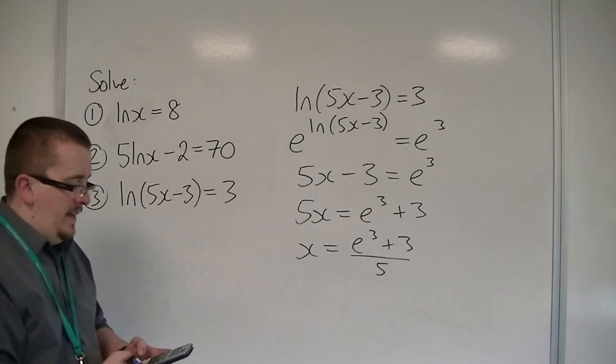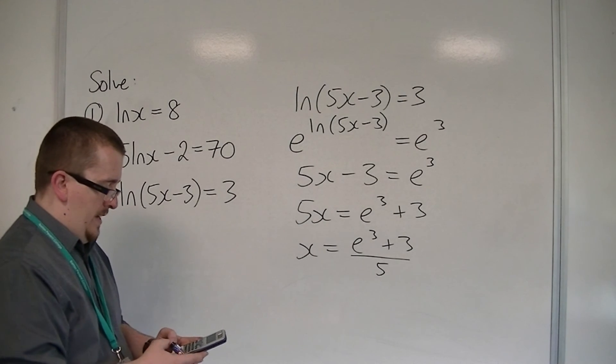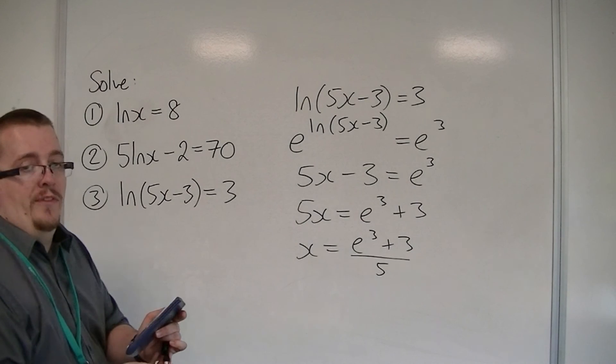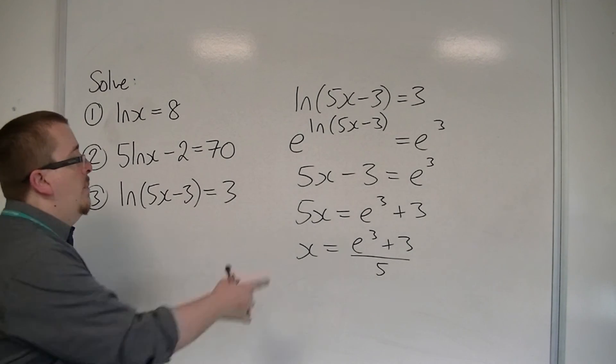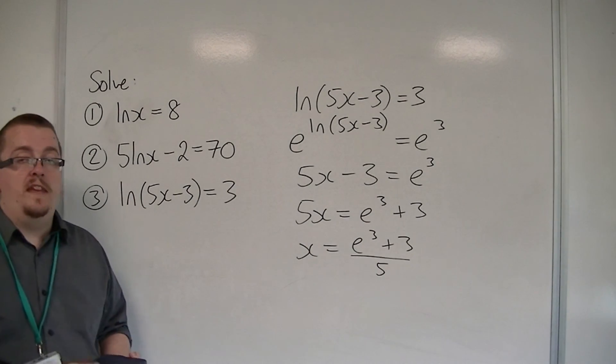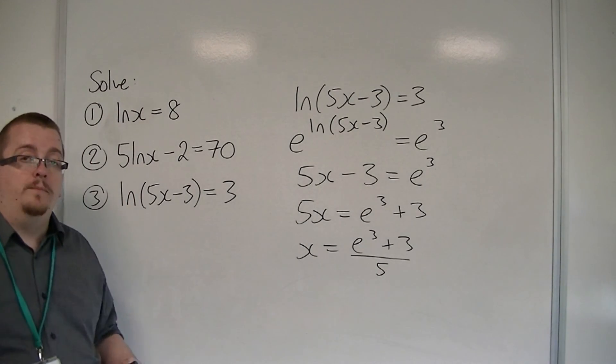On the calculator, if you plug that in, e to the 3, add 3, then divide by 5, and you get 4.617 to three decimal places. But that's the exact answer there. And that's how we can solve equations that have logarithms in them. Thank you.